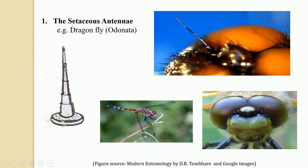Let us see them one by one. First is the setaceous antennae. In setaceous antennae, the flagellum looks like a bristle due to the gradual reduction in size of the segments. The antennae are broadly categorized into three divisions: scape, pedicel, and flagellum. In setaceous antennae, there is a gradual reduction in the size of segments, causing the whole antennae to look like a bristle, with fewer antennal segments particularly in the flagellum.